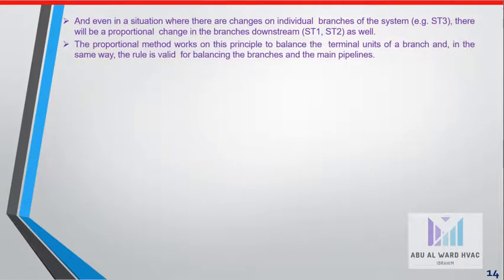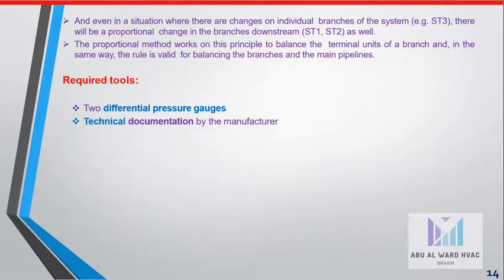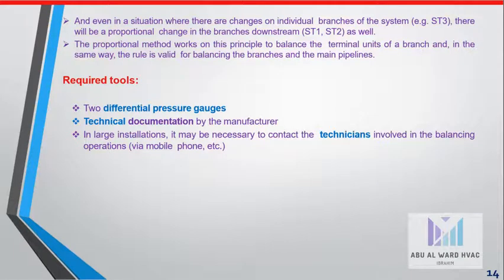The proportional method works on this principle to balance the terminal units of a branch, and in the same way the rule is valid for balancing the branches and main pipelines. Required tools: differential pressure gauges, technical documentation by the manufacturer, enlarged installation, and technicians may need to communicate through mobiles. The balancing procedure has mainly three stages.